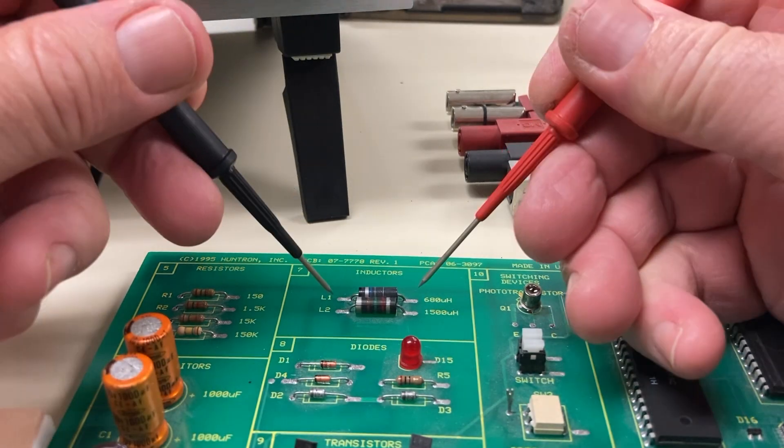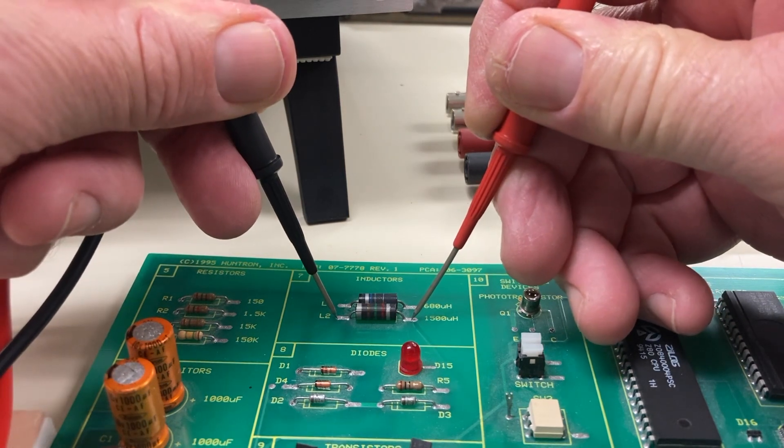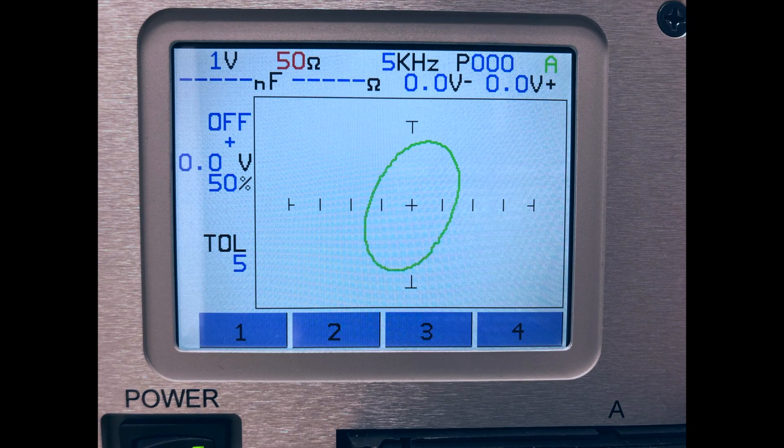Inductive components generally provide signatures similar to capacitors, but the adjustment of the range settings is somewhat different. As the value gets smaller, the resistance range decreases and the frequency range increases due to the reduced number of wire turns in the component.